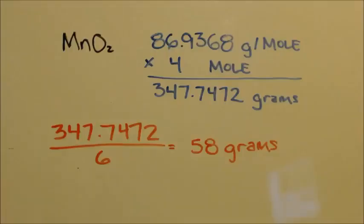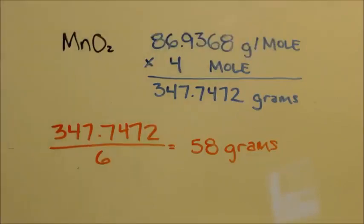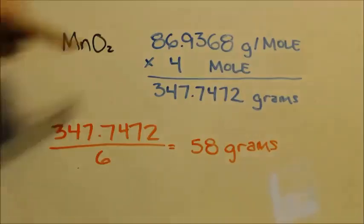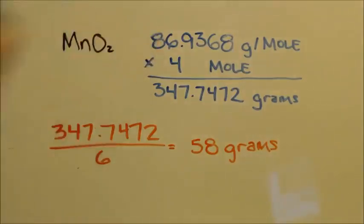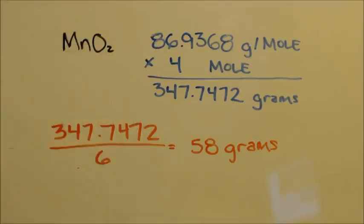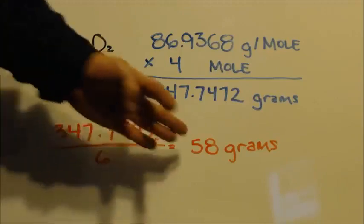Now the manganese dioxide — I'm going to do it all at once, so I didn't extract any of it yet. It's too dirty to be getting little samples out to see what kind of yield I got. MnO₂ has a molar mass of 87 grams per mole. The equation called for four moles, so I multiplied it by four. We divided by six for everything, so I divided by six.